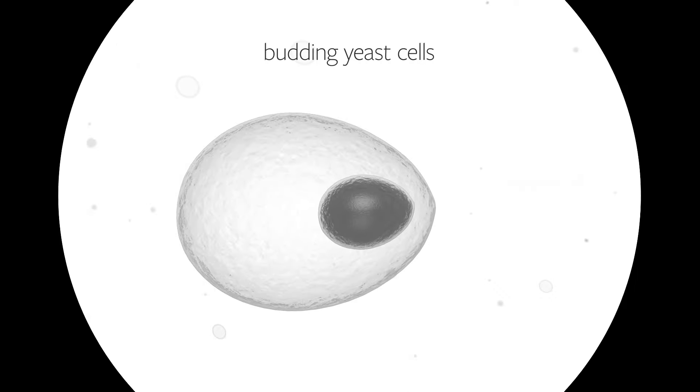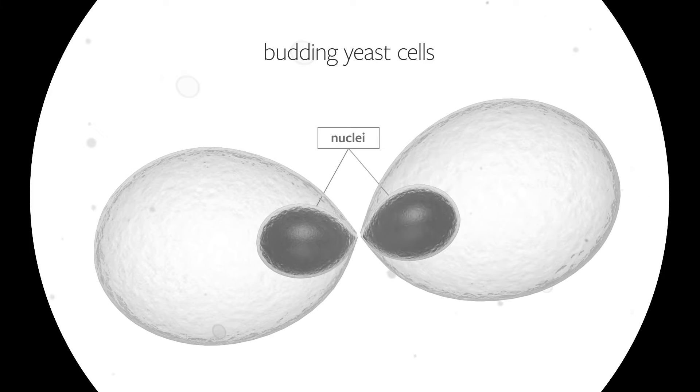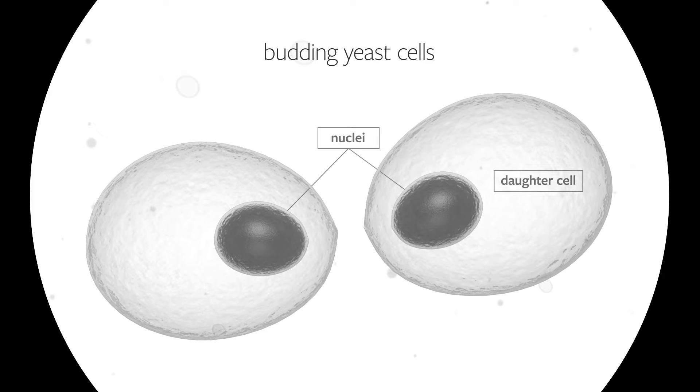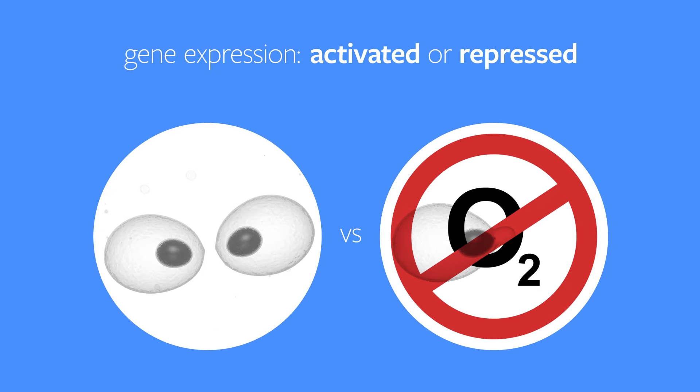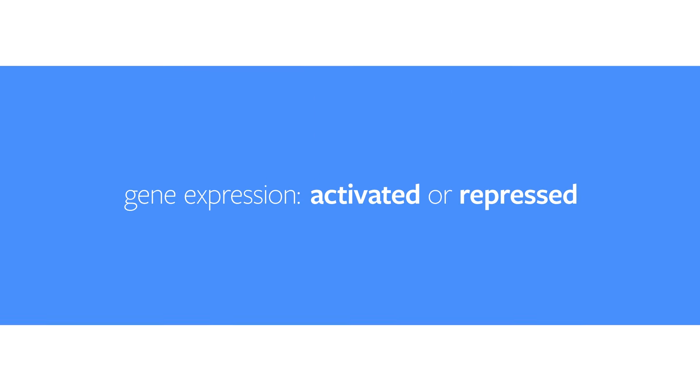In this example, we'll use yeast as a model system to illustrate one use of microarrays. One common use of microarrays is to determine which genes are activated and which are repressed when two populations of cells are compared. Every gene is measured simultaneously.